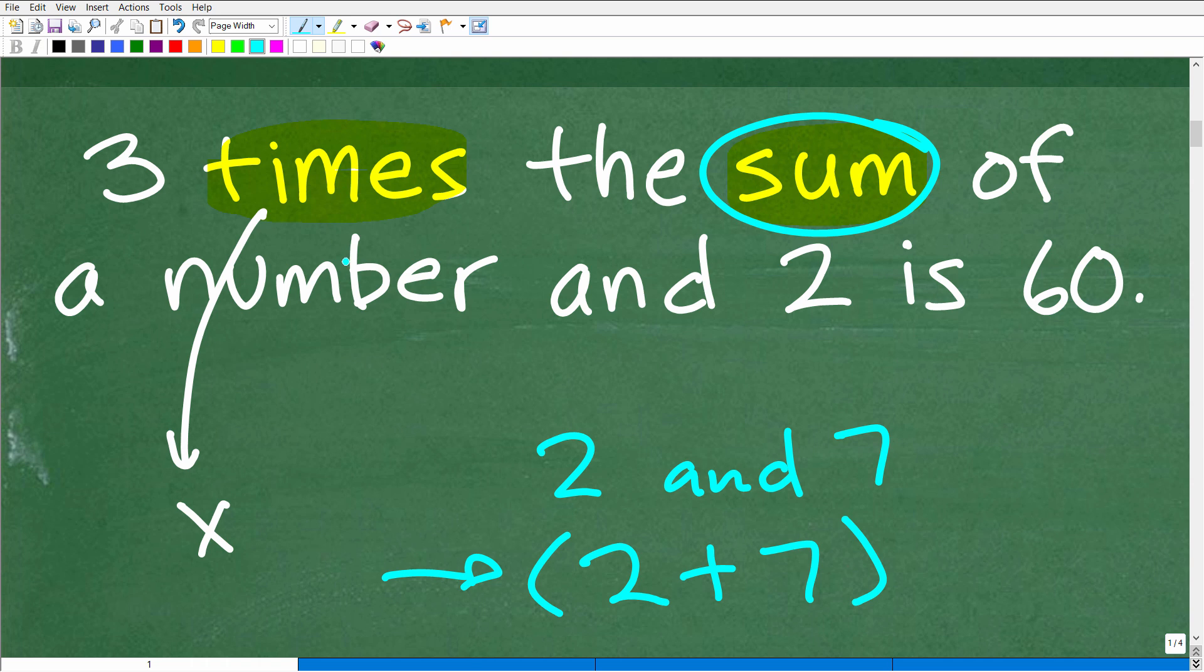So we have three times the sum of a number and two is 60. Let's go ahead and take a look at another word here. And that is, is. Anytime you see the word is in a verbal situation, in terms of mathematics, that's always the equal sign.